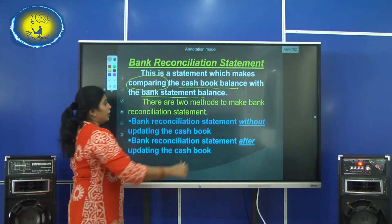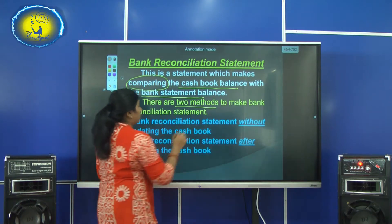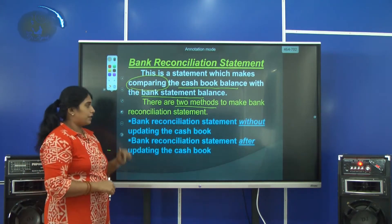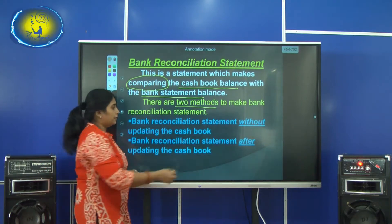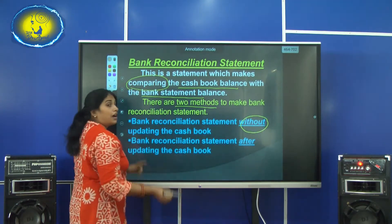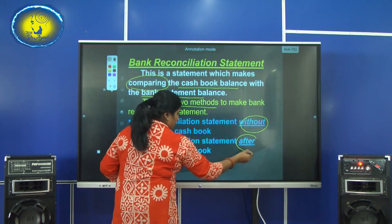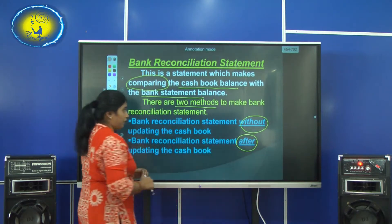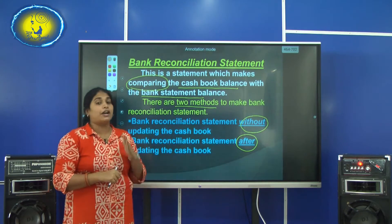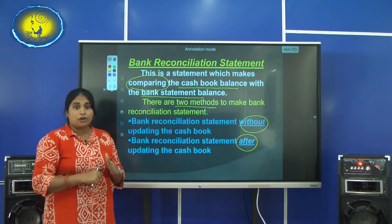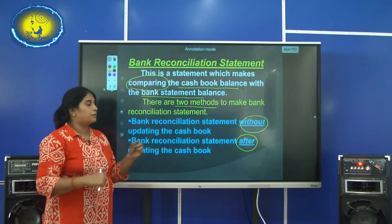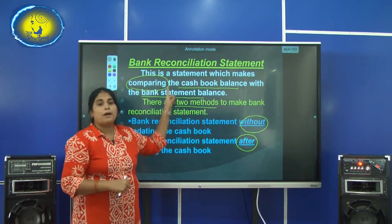You can use two methods to make the bank reconciliation statement. The first method is without updating the cash book and the second method is after updating the cash book. The bank reconciliation statement is a temporary statement where you record the transactions which make the difference between the two balances.